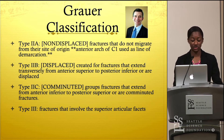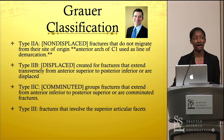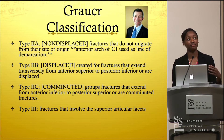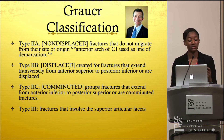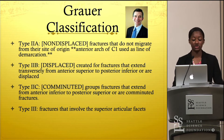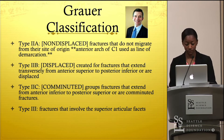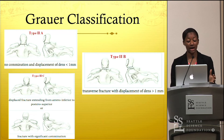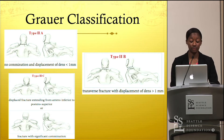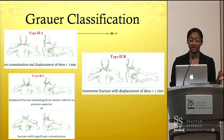Gruer created a classification in 2005 to break down type 2 fractures further. Type 2A is characterized as non-displaced, meaning the odontoid process has not moved from its original site. Type 2B is displaced. Type 2C is characterized as comminuted. Type 3 fractures may have involvement of the superior articular facets. This illustrates 2A as not displaced and not comminuted, 2B as most often displaced, and 2C as characterized by comminution.